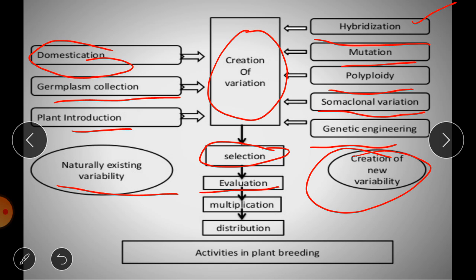The next step is multiplication, where large-scale certified seed production is undertaken and seeds are released as notified varieties. The last step is distribution, where certified seed is ultimately sold to farmers who use it for commercial crop cultivation. So plant breeding involves five major activities: creation of variation, selection, evaluation, multiplication, and distribution.